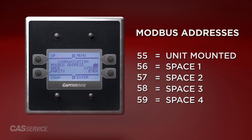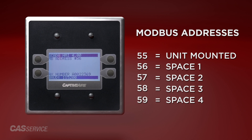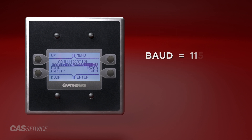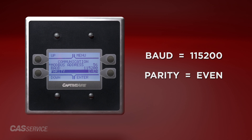If a change is made in the communication section, you will be prompted to save this change as you click menu to back out. The baud rate and parity should always be set to the default of 115,200 and even.